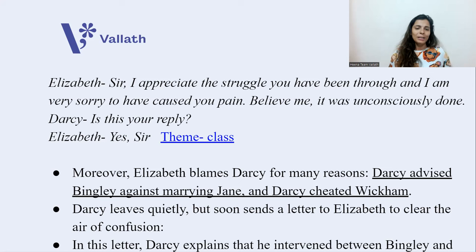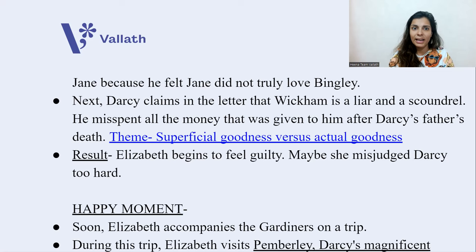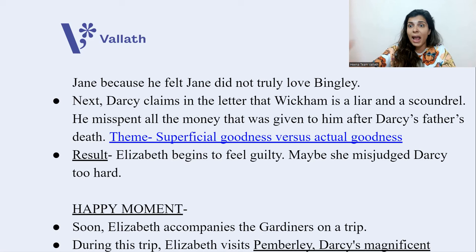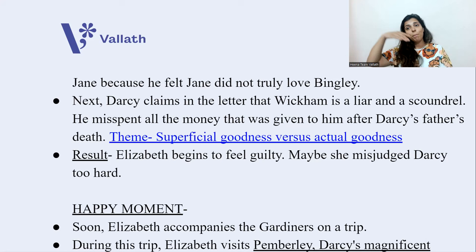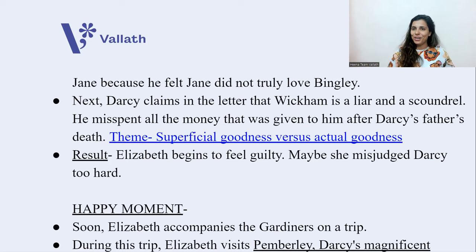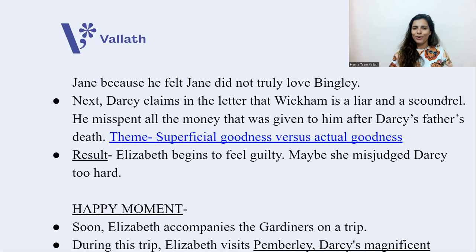In this letter, Darcy explains that he intervened between Bingley and Jane because he felt Jane did not truly love Bingley — Jane never showed any extra interest towards him. Next, Darcy claims that Wickham is a liar and a scoundrel who misspent all the money that was given to him after Darcy's father's death. Here the theme is superficial goodness versus actual goodness — Wickham represents superficial goodness, whereas Darcy represents actual goodness. After reading this letter, Elizabeth begins to feel guilty; she judged Darcy too harshly, and her prejudice took over her.